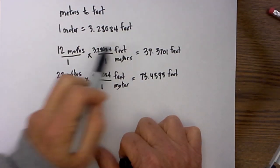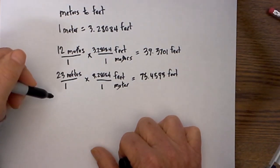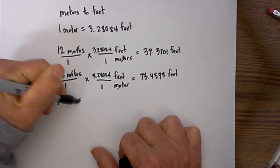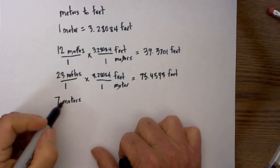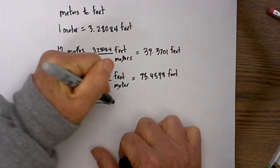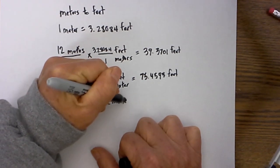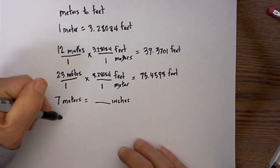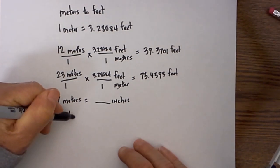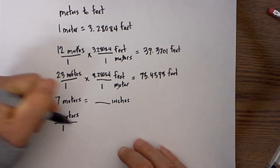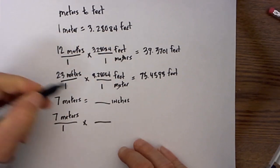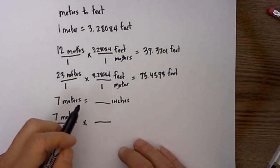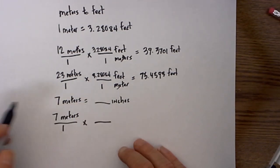Now I know you could just multiply meters times the conversion factor and you don't have to set it up exactly like this, but if you learn the technique you can convert anything. Say you have 7 meters and you would like to know how many inches that equals. I take what is given and place it over 1. I need to go to inches, but I don't know how many meters are in an inch, but I do know how many meters are in a foot.